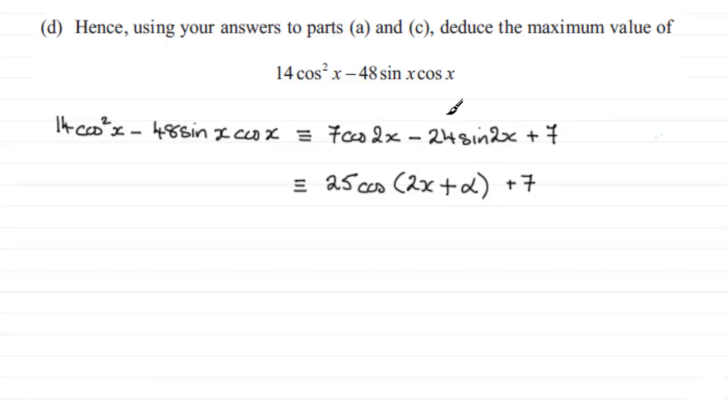And then in part a, we found that this part, 7 cos 2x minus 24 sine 2x, was identical to 25 cos of 2x plus alpha. It was r cos 2x plus alpha, and then we've got the plus 7 on the end. So how does this help us to find the maximum value of this?